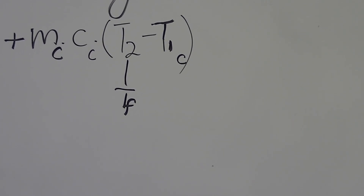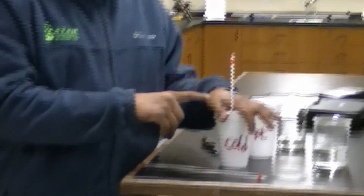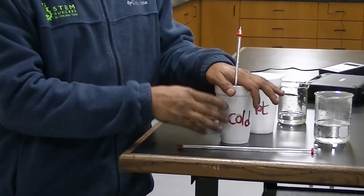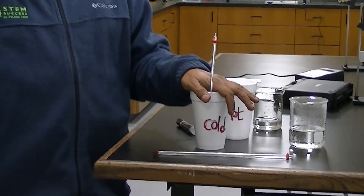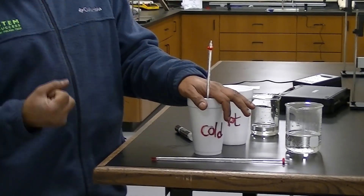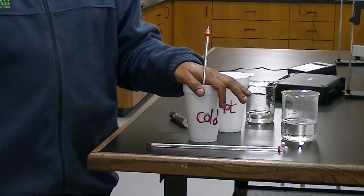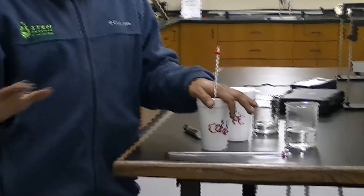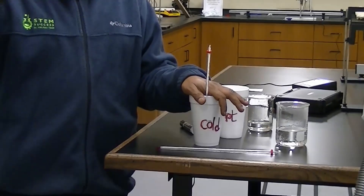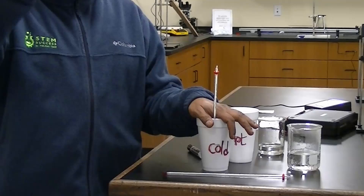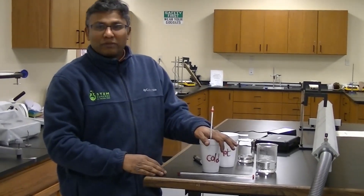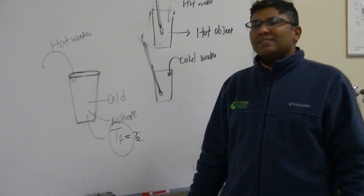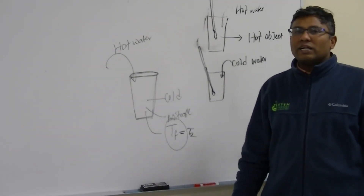In a total closed system, you should end up getting the same numbers from experiment and calculation. This experiment proves that total heat lost by the hot water equals total heat gained by the cold water. Heat transfers from the hotter object to the cooler object — not from cold to hot — until both reach the same temperature. We will provide all the data; you just have to do the calculations, scan your work, and submit for grading. Thank you.